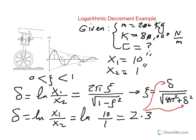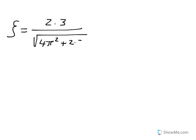So now you know your delta is 2.3, so you can go ahead and plug it in and solve directly for zeta. So zeta is going to be equal to 2.3 divided by square root of 4 pi squared plus 2.3 squared. And that comes out to be 0.344.